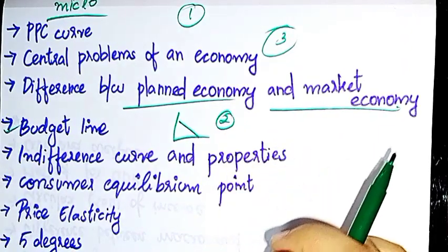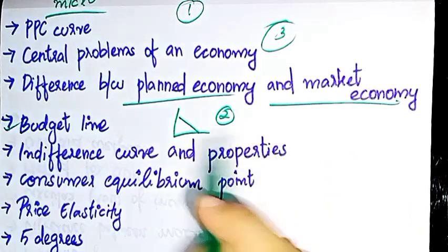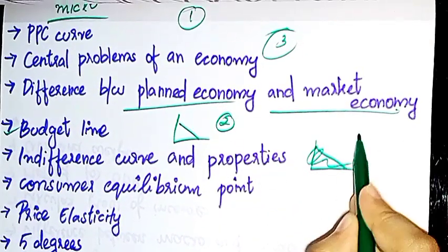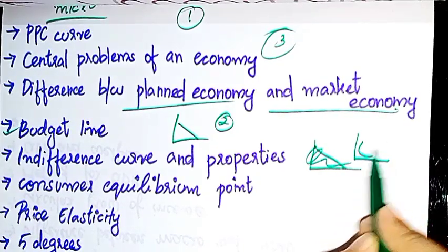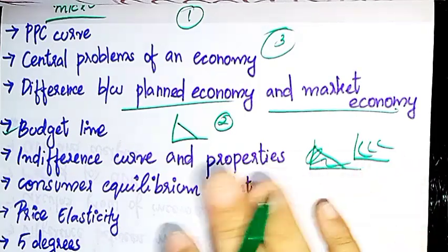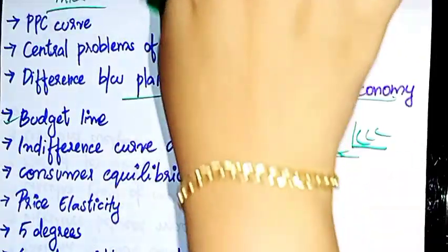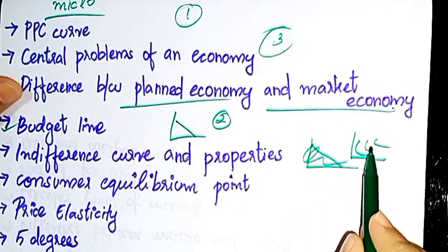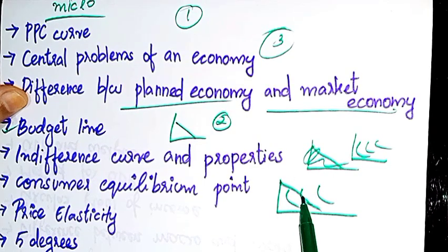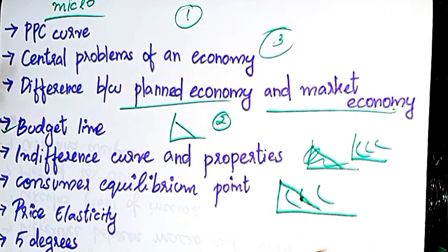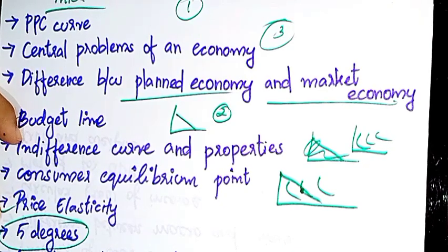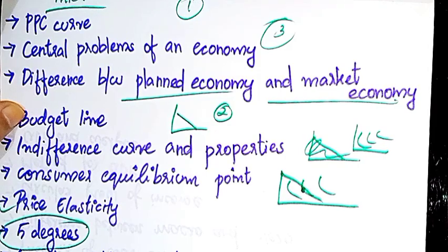Next one is Indifference curve and properties. Indifference curve is also called Indifference map. Now I will go to consumer equilibrium point. Then price elasticity in the second chapter.